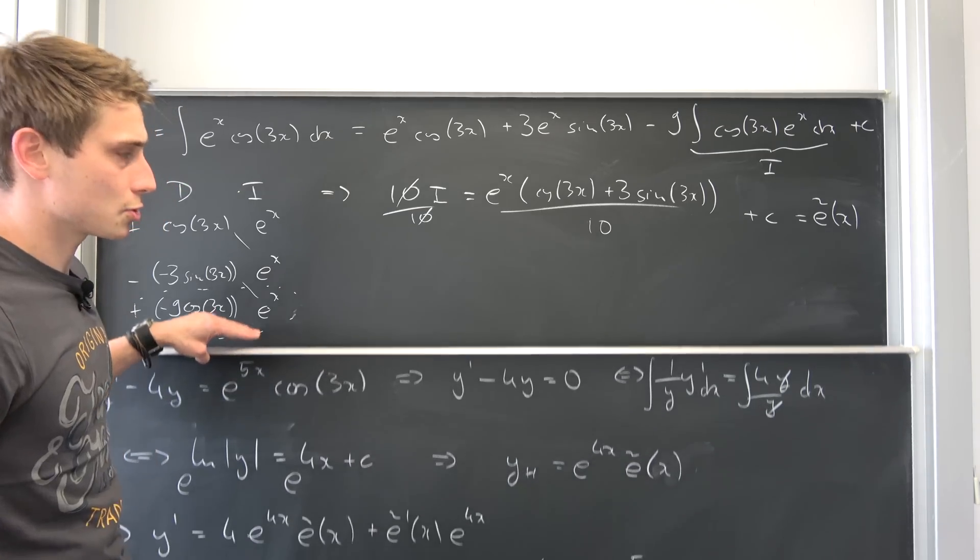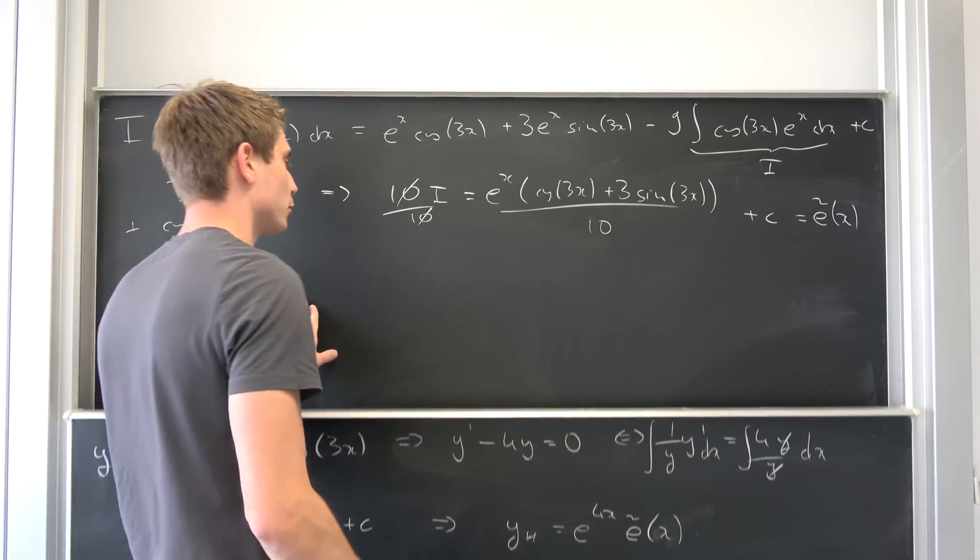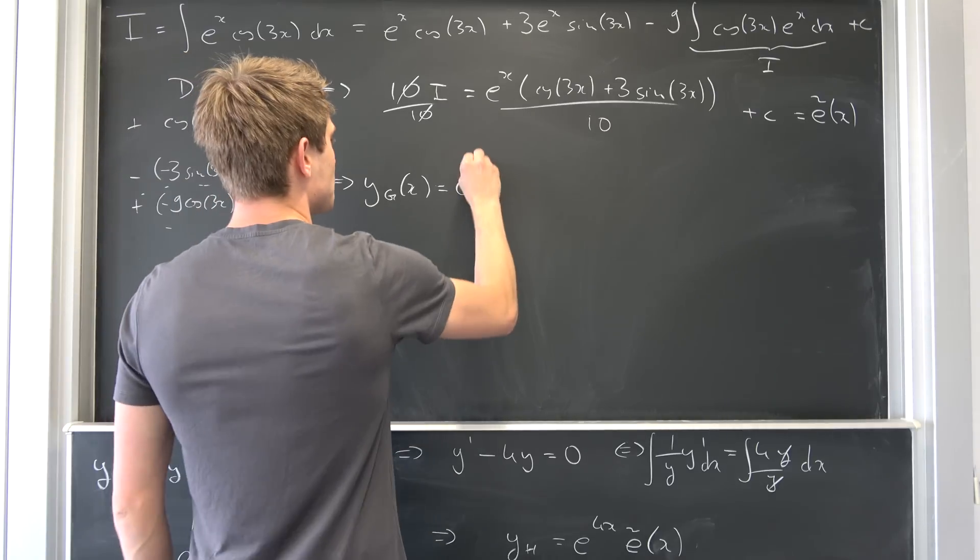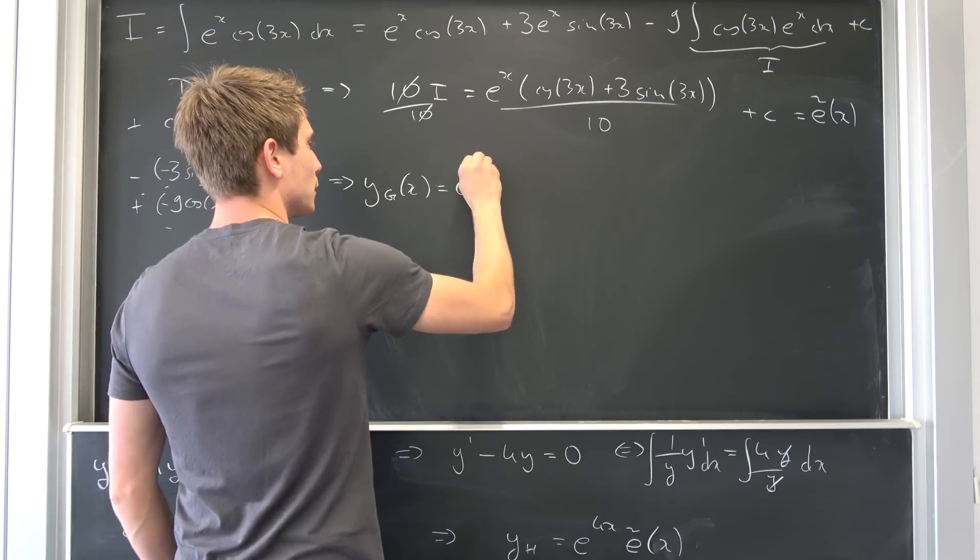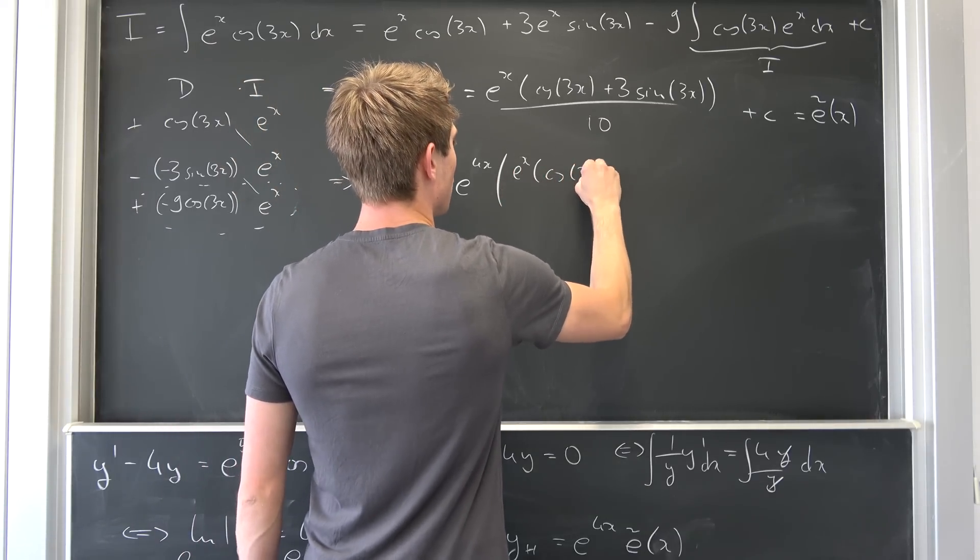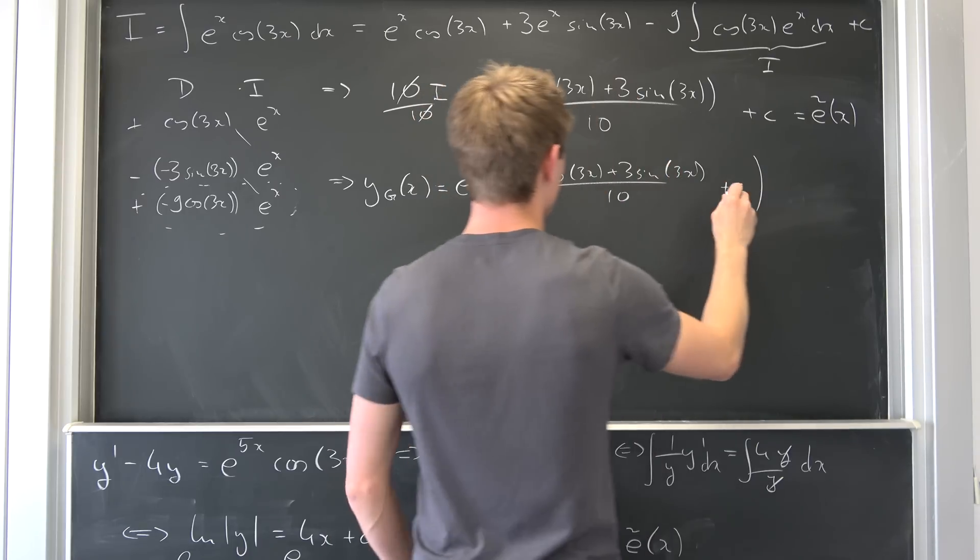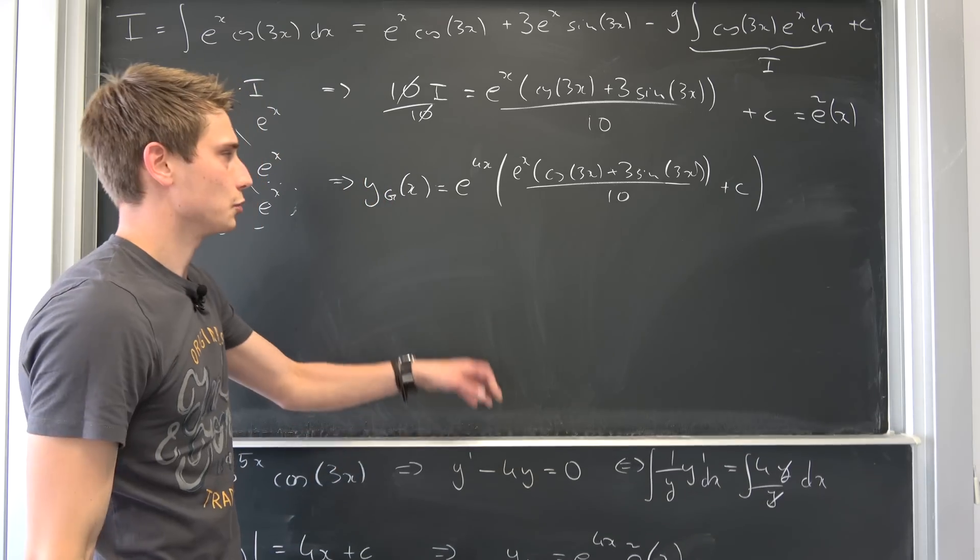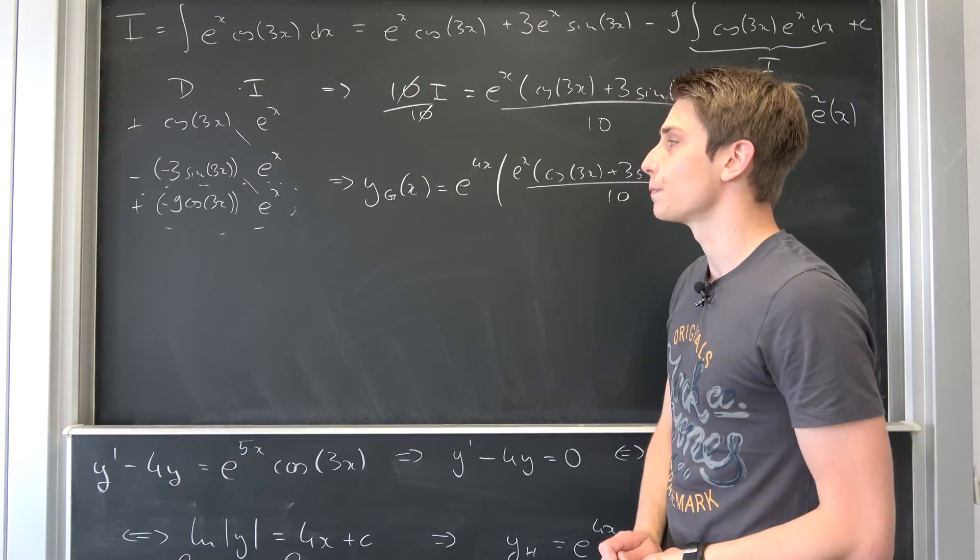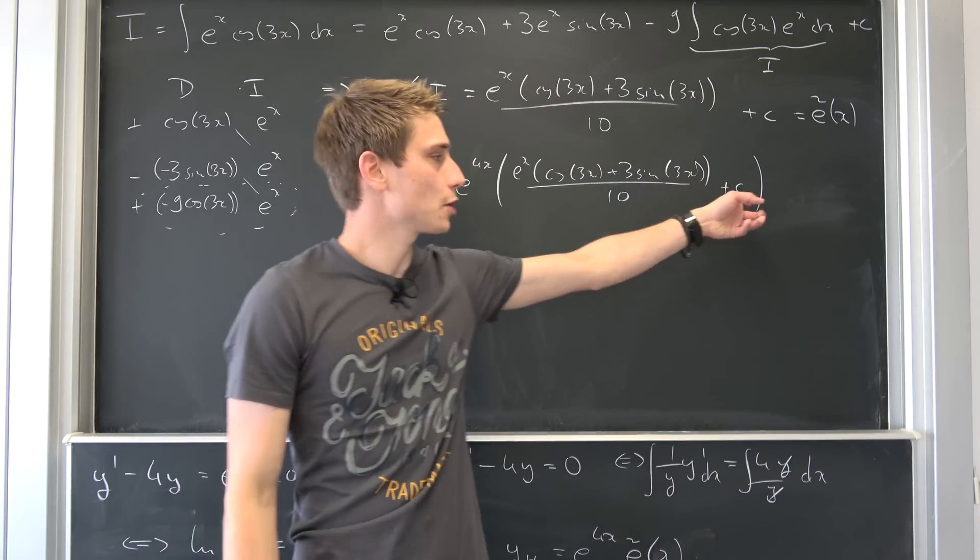And well, we are already done to be honest all that we left is to plug our value for e-schlange of x into this complementary solution to get our general solution for this differential equation. So that also means y general of x is now nothing but so we have e to the 4x times e to the x cosine of three times x plus three sine of three times x over 10 plus some arbitrary constant c. Well, and what you can do you can bring this to the inside if you like but this in general is already our general solution for y.